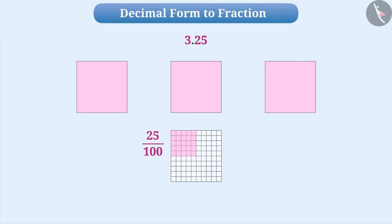As you can see, that this shaded part is 1 fourth part of the whole. So, we will write 1 by 4 in place of 25 by 100.